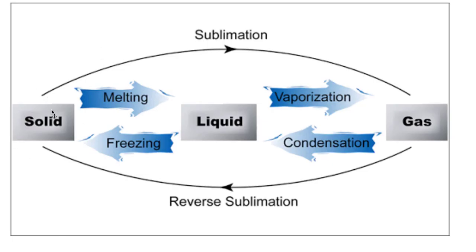Summary of state changes: solid changes into liquid — we call that melting, for example ice changes into water. Liquid changes into solid — we call that freezing. Liquid changes into gas — we call that evaporation or boiling. Gas changes into liquid — we call that condensation.